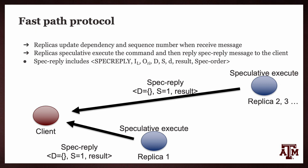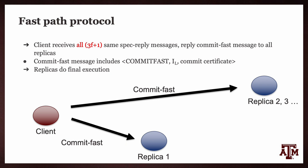In this example, other replicas also find nothing needs to be done before L1, so the dependency and sequence number remain the same. When the client receives the same spec reply messages from all replicas, it replies with commit fast messages to all replicas. The commit fast message includes a commit certificate, which replicas can use to prove they followed the client's order. Finally, the replica commits its speculative execution and performs final execution.